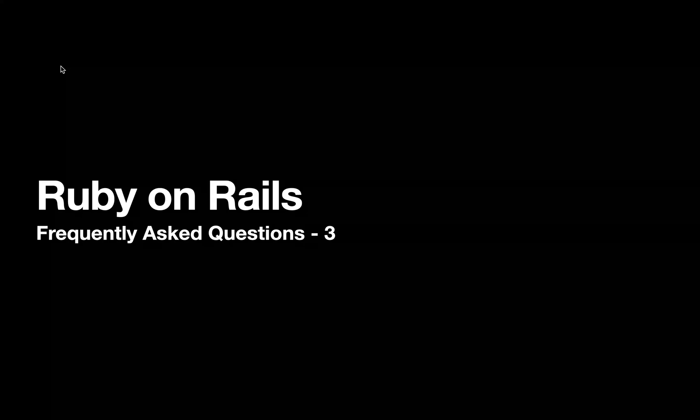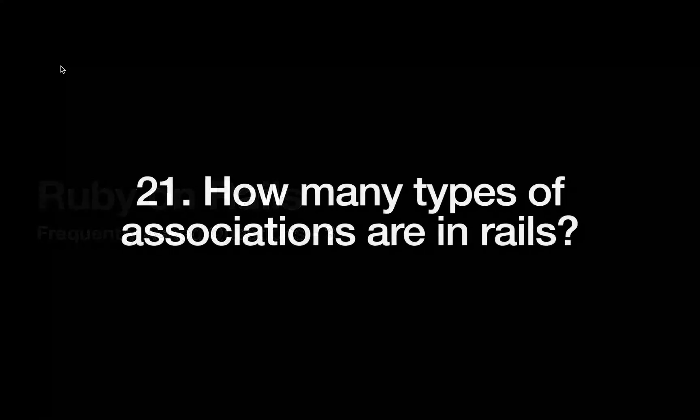Hey guys, this is part 3 of our Ruby on Rails frequently asked questions series. In this video you will find another 10 questions, so let's start with the first question: how many types of associations are in Rails?